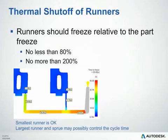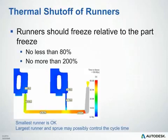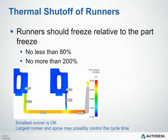Another thing to be aware of is the thermal shutoff of your runners. Runners should be sized so they allow the parts to fill and pack without controlling your cycle time. As a general rule of thumb, you don't want your runner to freeze off at less than 80% of the actual freeze time of your part, ensuring the gate does not freeze off before packing is complete. On the other hand, you do not want it to be more than 200% of the part freeze time, as that would mean your feed system is controlling your cycle and wasting time.